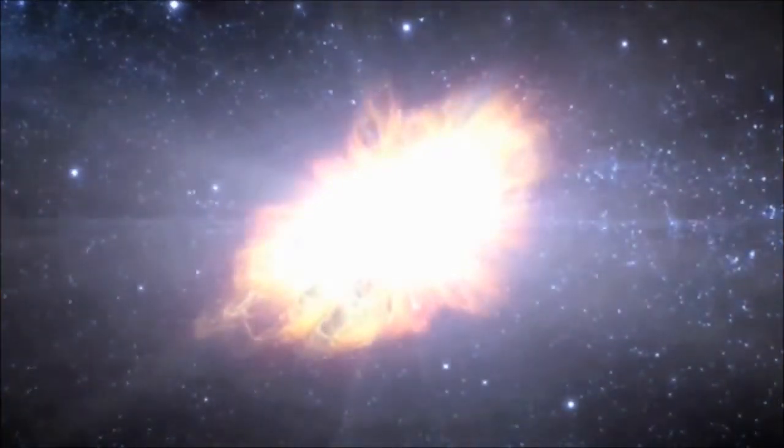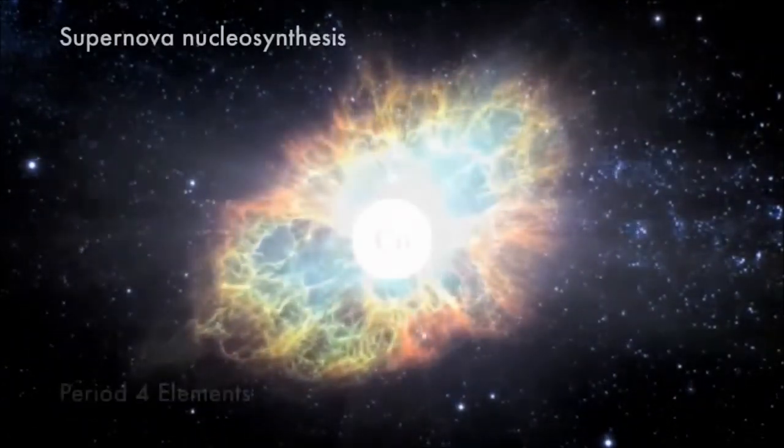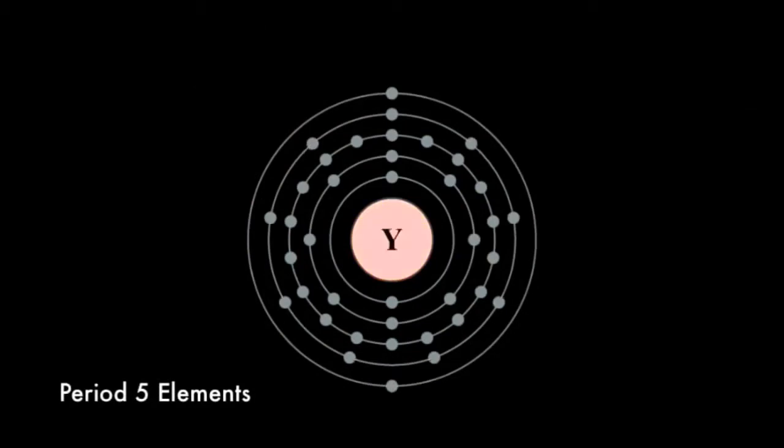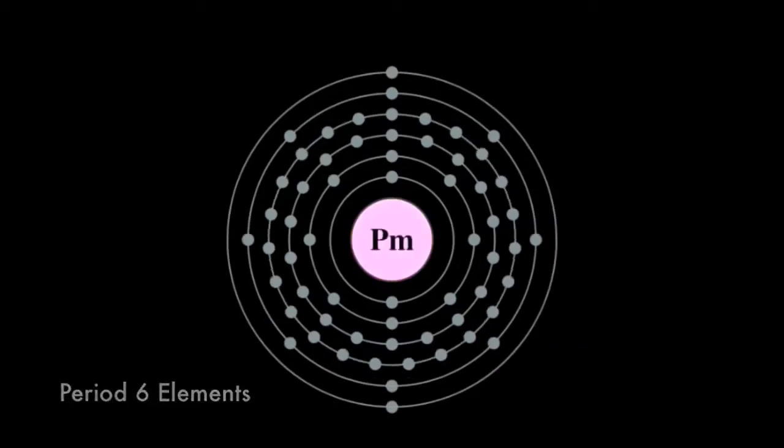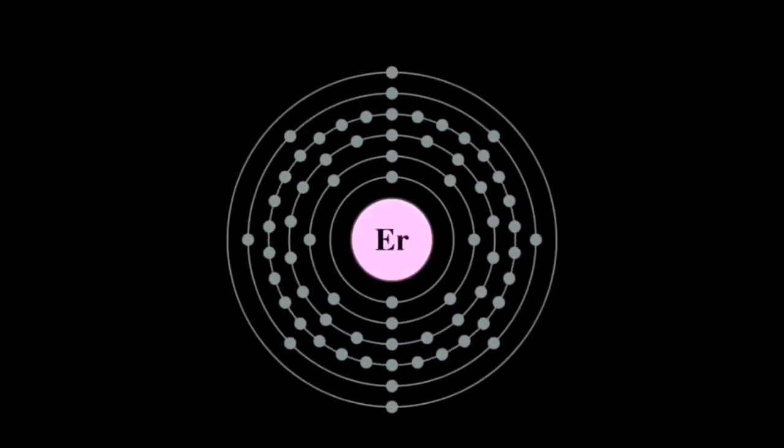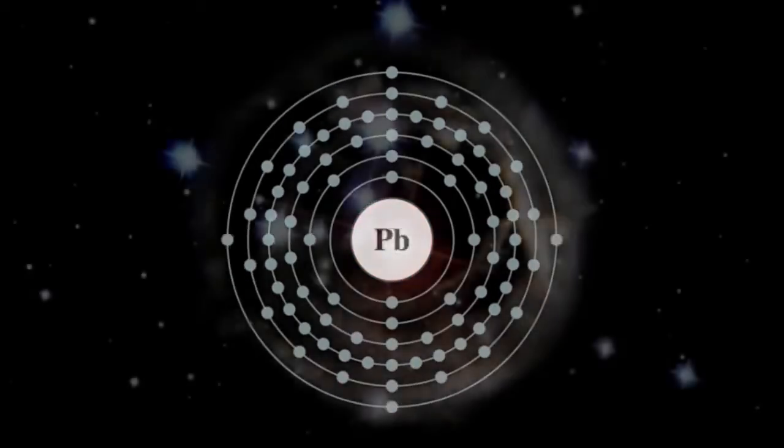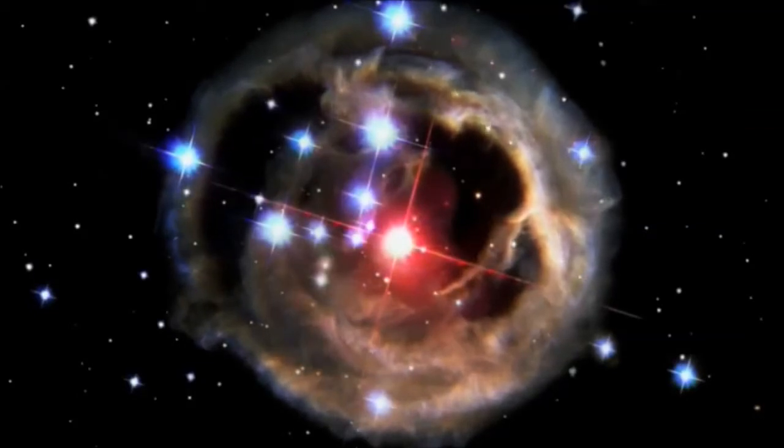When supernovae explode, they have profound effects on their surroundings and galaxies. The energy of the explosion also synthesizes new elements, particularly those heavier than iron. These fresh new elements are then sprinkled into the surrounding gaseous medium, enriching it. And so, the later generations of stars formed after the supernova contained more heavy elements than previous generations.